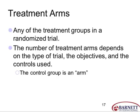Treatment arms — this is sometimes confusing to people. Basically, any group of subjects that's being treated in a certain fashion is considered a treatment arm. You might have a group of subjects taking your investigational product at a certain dose — that is one treatment arm. A group taking placebo is also a treatment arm. The number of treatment arms depends on factors like the type of study, objectives, and how many controls are used. You might have a placebo control and another comparator such as a standard of care. Even a control group getting no treatment at all is considered a treatment arm.